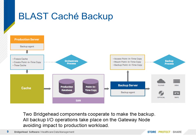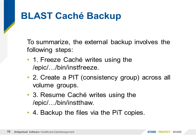Once that's completed, the backup server or gateway node will be performing the remainder of the work, separate from the production disk that will be used. To summarize: we're going to freeze the cache writes using an EPIC bin freeze, create the point-in-time consistency group across all the volume groups, resume cache writing once that's completed using the instthaw, and then back the files up using the point-in-time copy as opposed to the production copy.